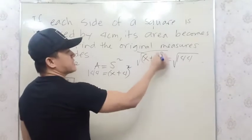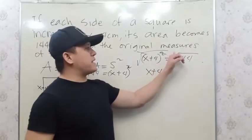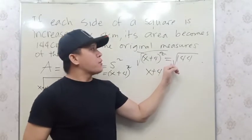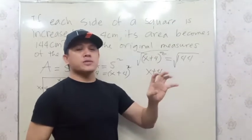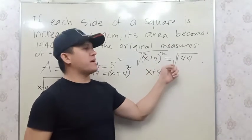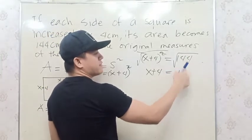So the square cancels and we have X + 4. Now usually we put positive and negative here, but since we're dealing with distances or measurements, we don't use negative. We just use the positive value. The square root of 144 is 12.